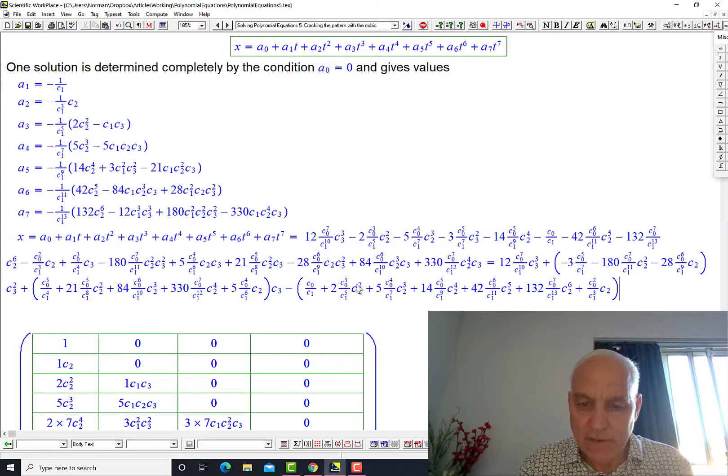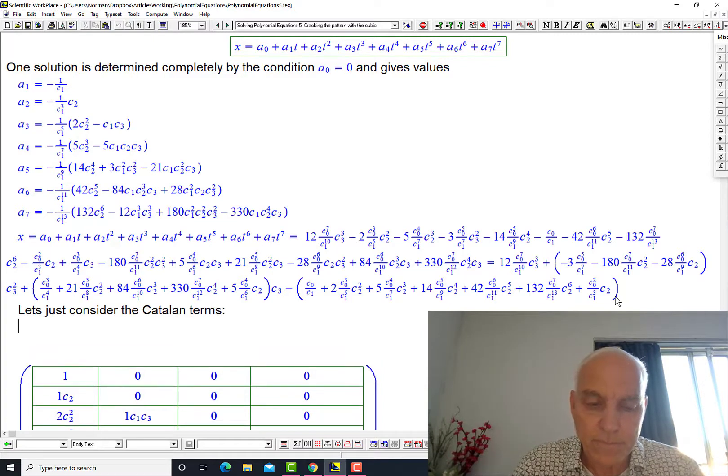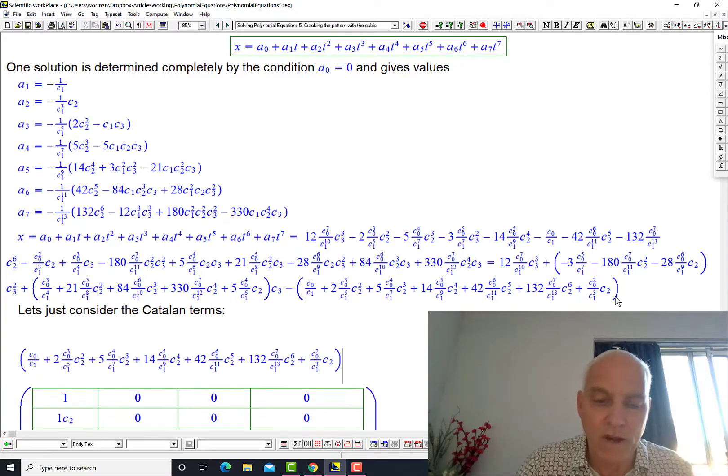So this one here that you see, this last thing here, this is the constant term with respect to c3. So these are the terms which don't involve any of the c3. These correspond exactly to this first column. And we do recognize the Catalan numbers appearing here. So I want to just stare at this just for a second. Let's just consider the Catalan terms.